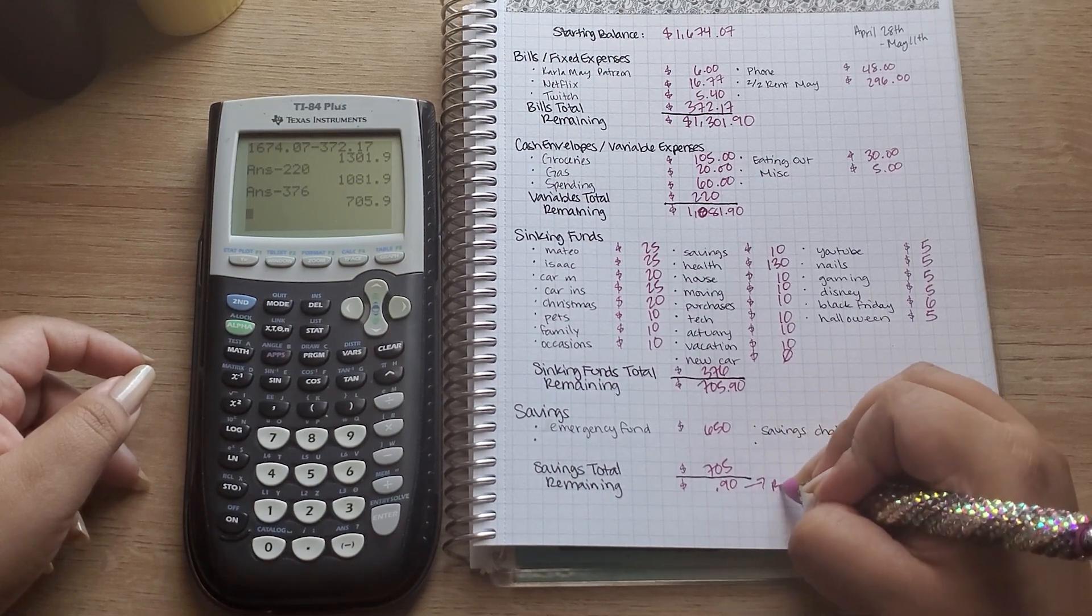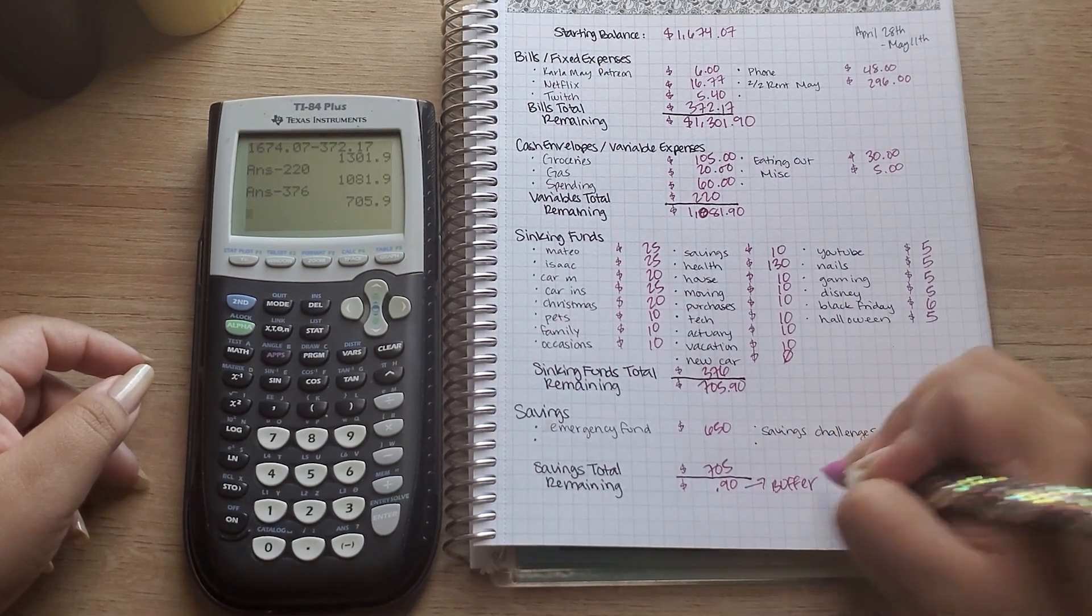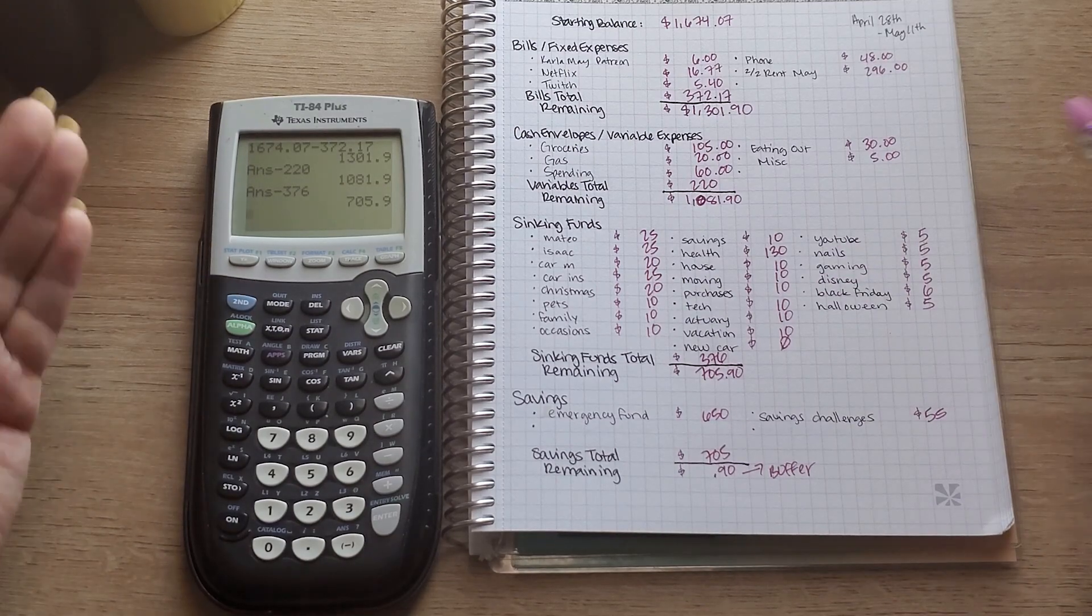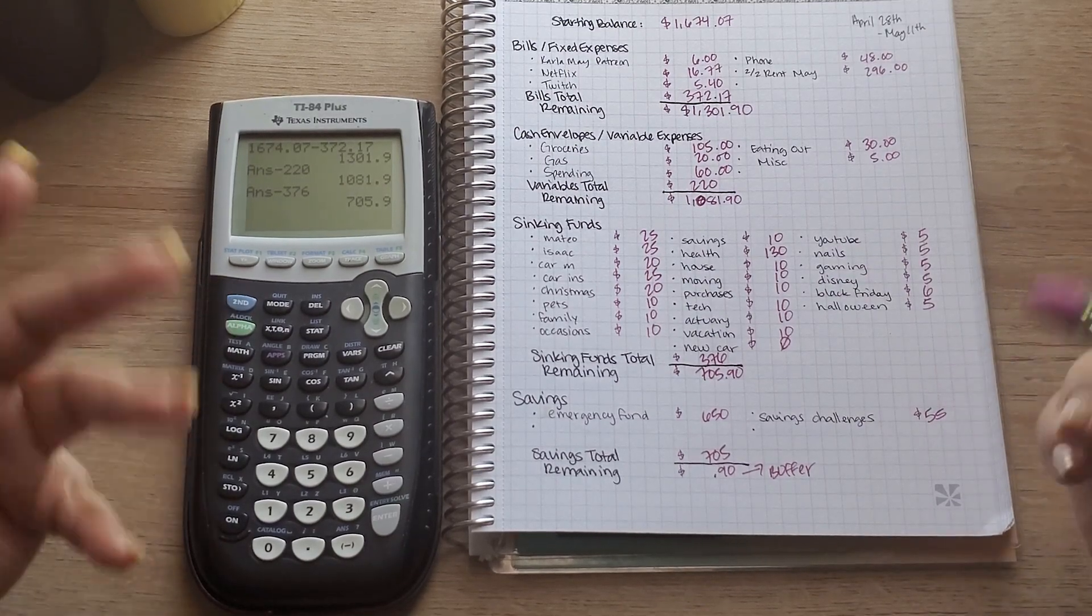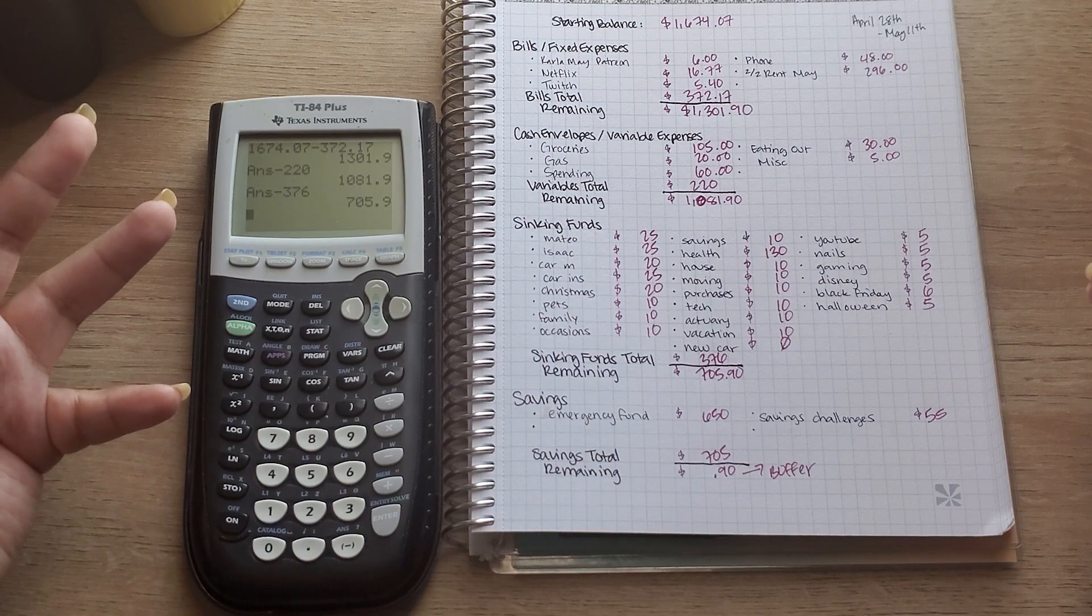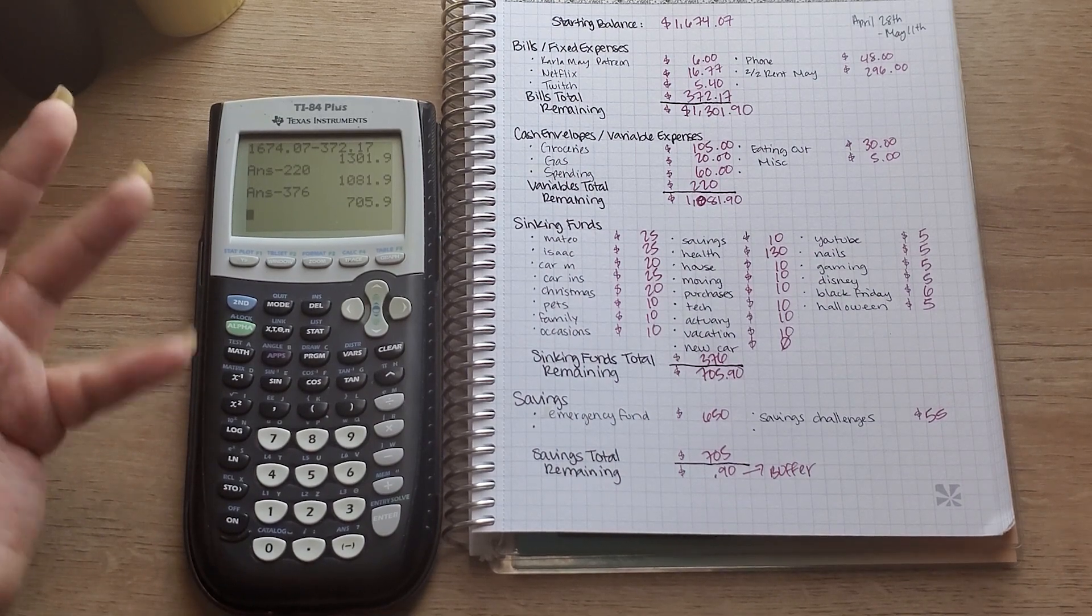So that right there just stays in my account as a little buffer. There we go guys, a fairly simple budget. This is what I do at least personally. I know everyone's different. Thank you guys so much for watching this video and I'll be seeing you guys next time, bye!